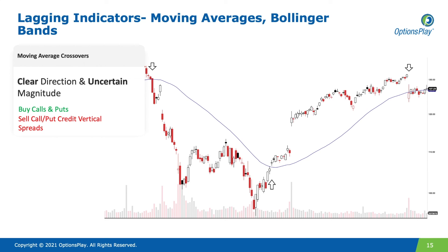Whenever you think about moving averages, consider whether you have a clear sense for magnitude. One indicator you can add to a moving average that helps create a target price is Bollinger Bands. When price exceeds a Bollinger Band and you expect it to mean-revert back to the moving average, that gives you a clear sense for direction and magnitude, allowing you to use a debit spread. Looking for a breakout above a moving average to reach the upper band can also create a target price. These are modifications that give you some sense for magnitude.